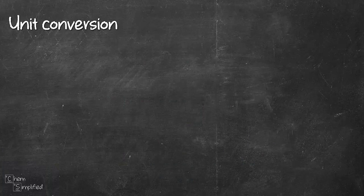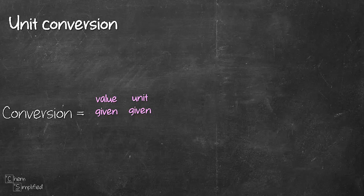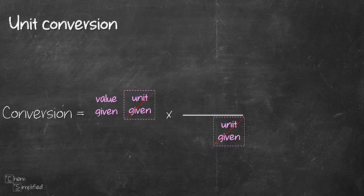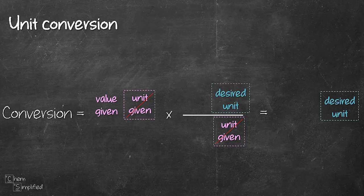To recap, when converting between units always start with the value that is given followed by the unit and then we multiply and draw a line across. At the bottom of the line place the unit that is given so they cancel off. At the top of the line place the desired unit that will give us the final unit which is what we want. Then we insert in the numbers from the conversion factor.